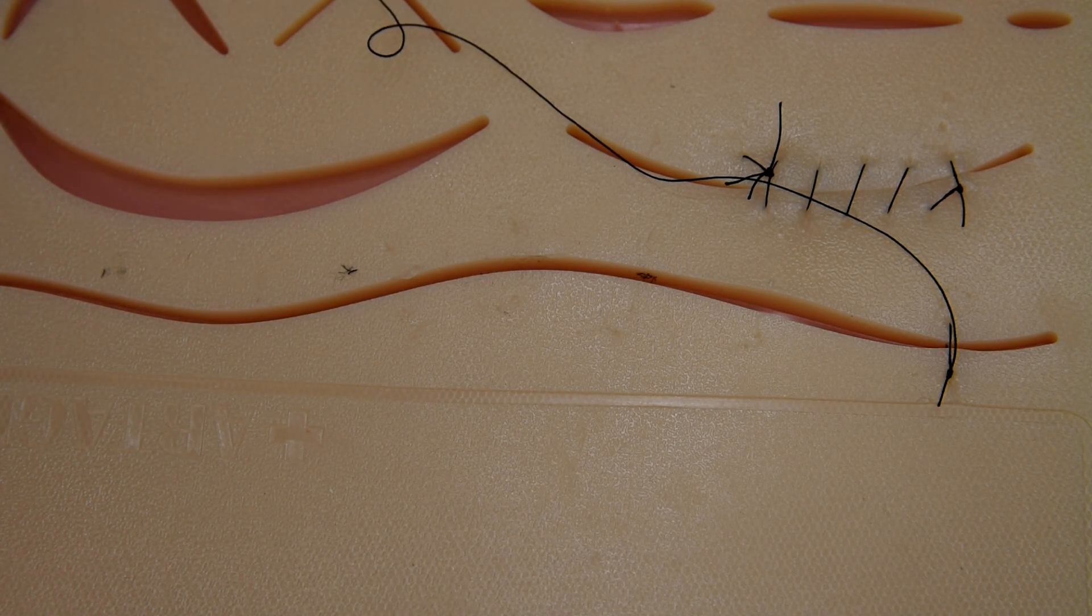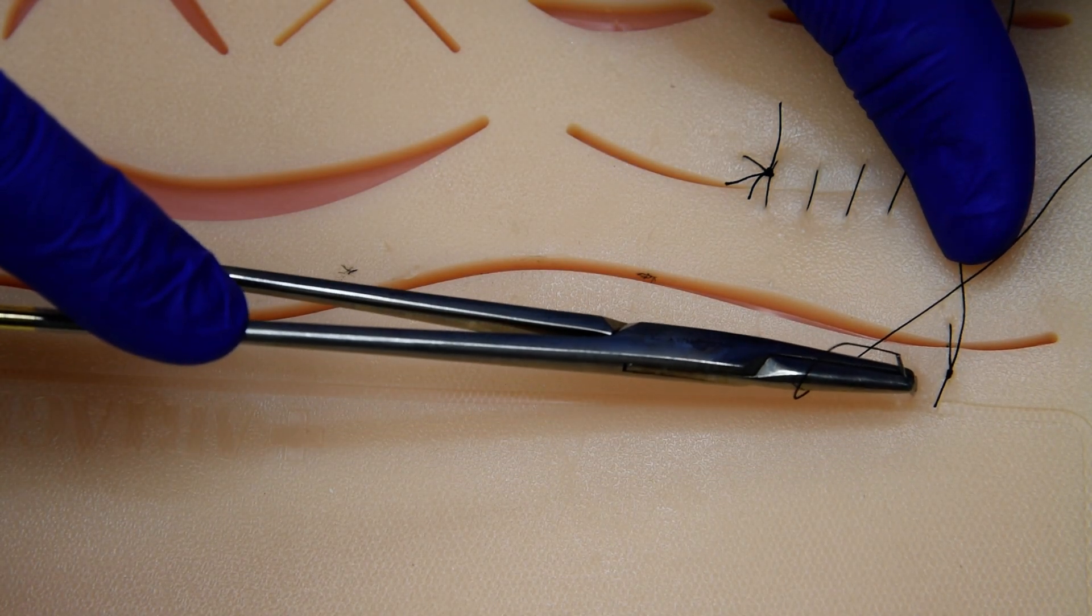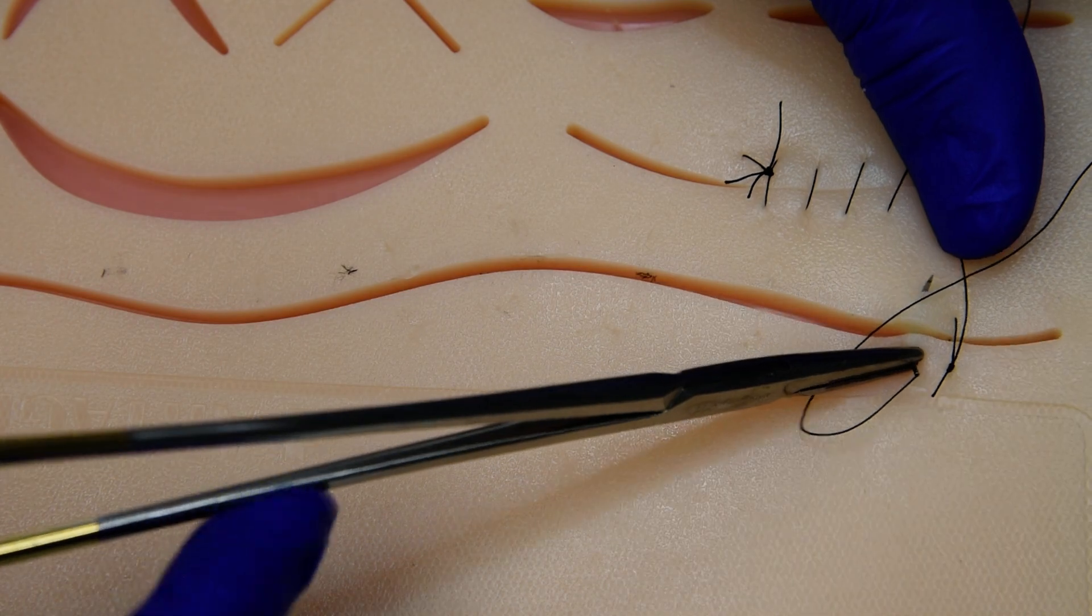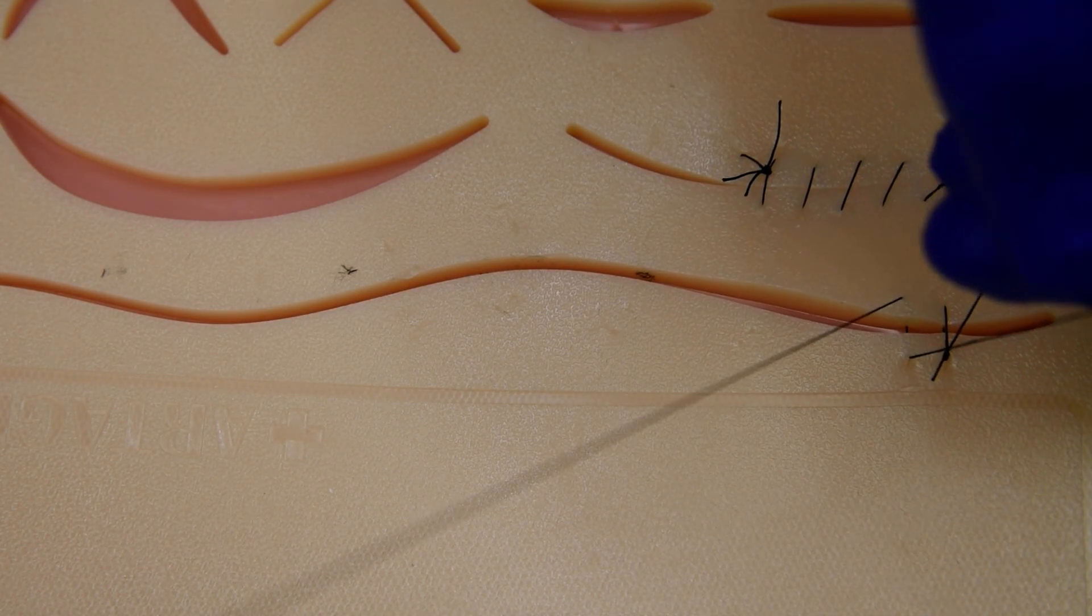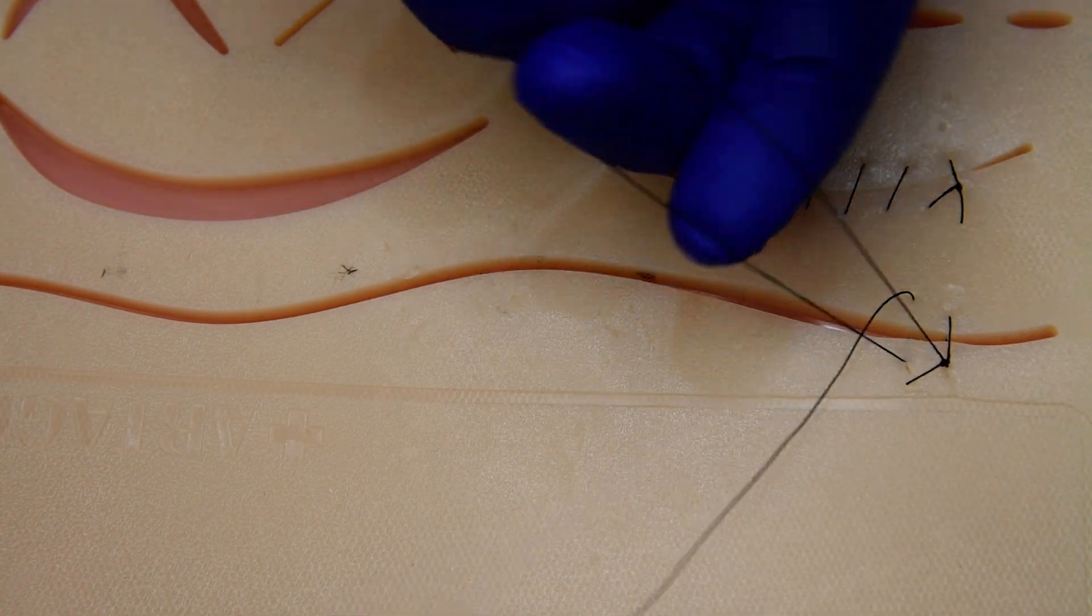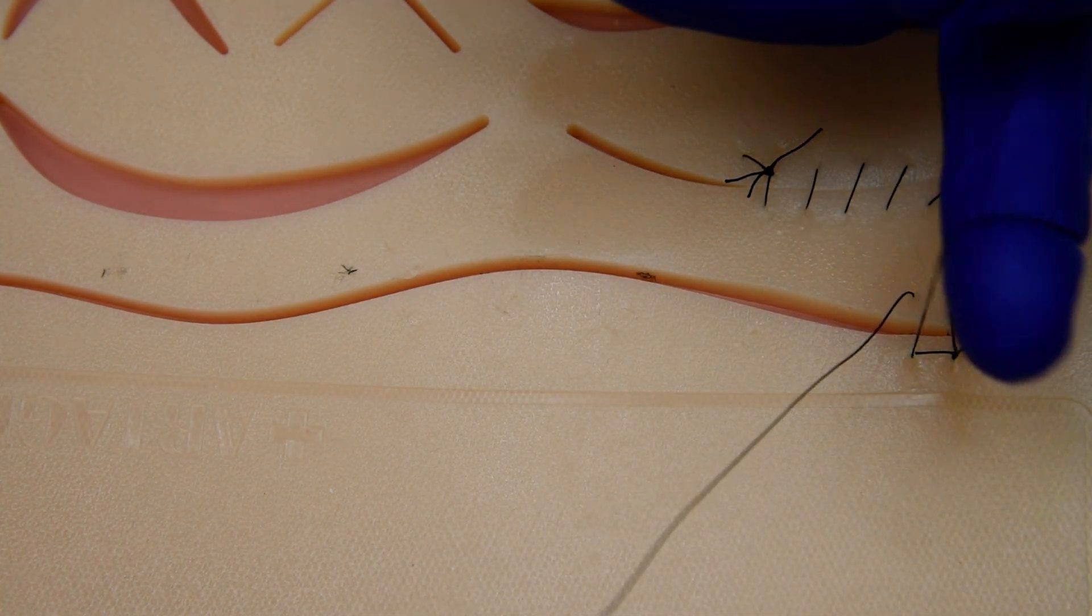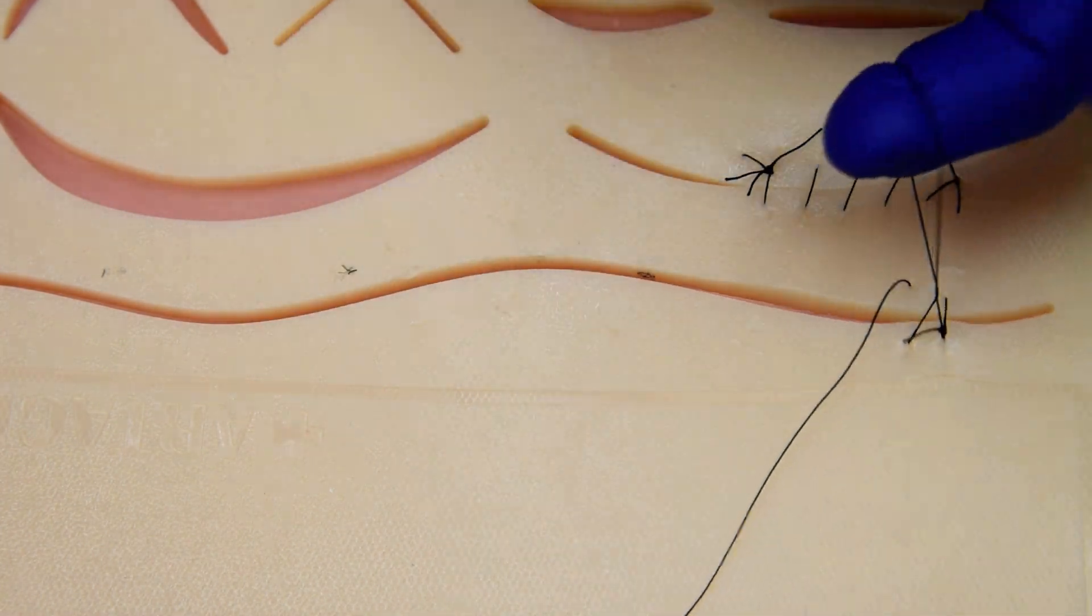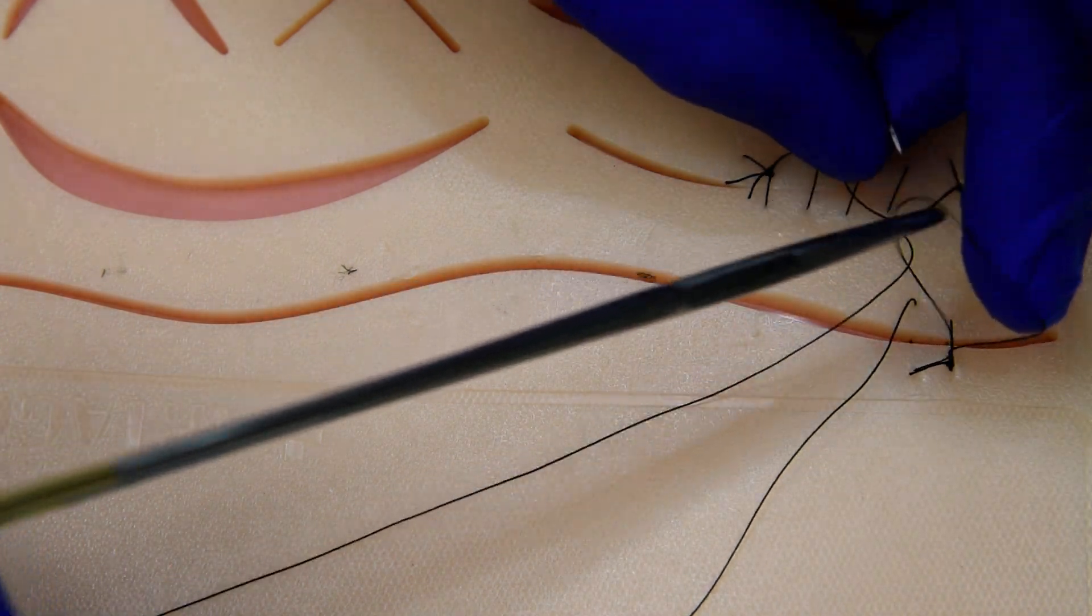So we'll start similar to the simple continuous. We're going to do another bite about three to four millimeters adjacent, three to four millimeters deep. But rather than simply cinching this, we're going to leave the loop, and we're going to twist the loop all the way around once and pass our needle through it to ourselves.